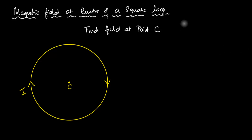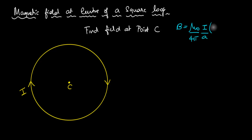I'm going to use the same formula I've been using for quite a few episodes now: the magnetic field due to a finite straight wire, which is μ₀/4π times i/a times (sin α + sin β). If you're not familiar with this formula, please pause right now, go back, watch all those episodes and come back, because it's not going to make any sense to you.